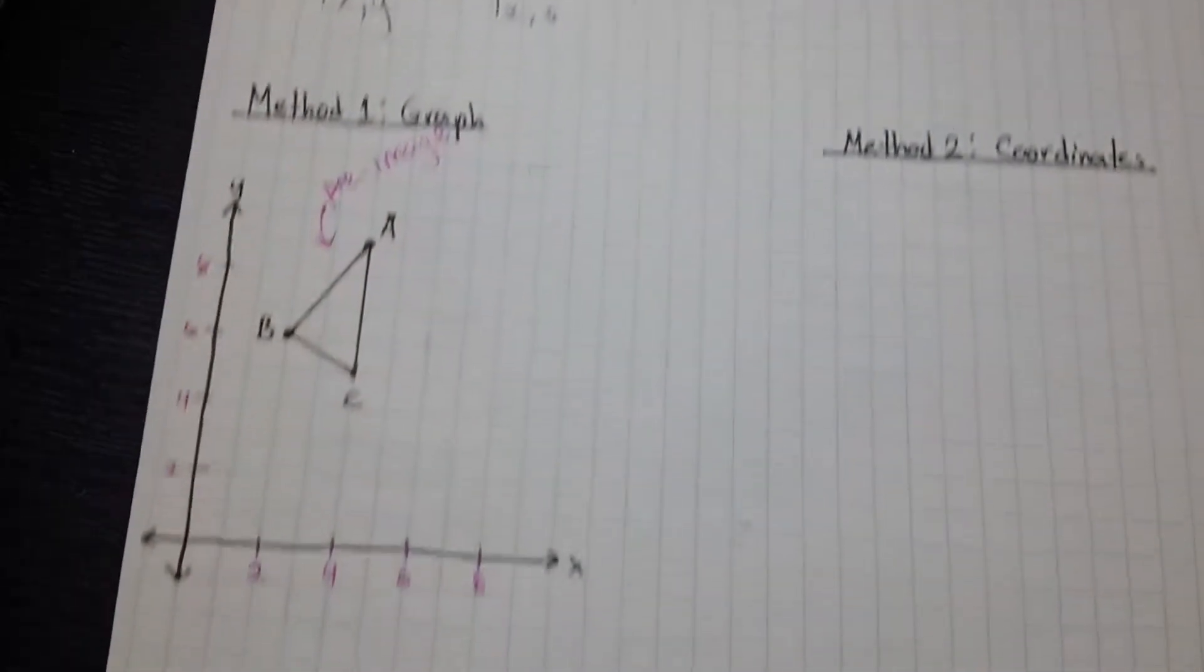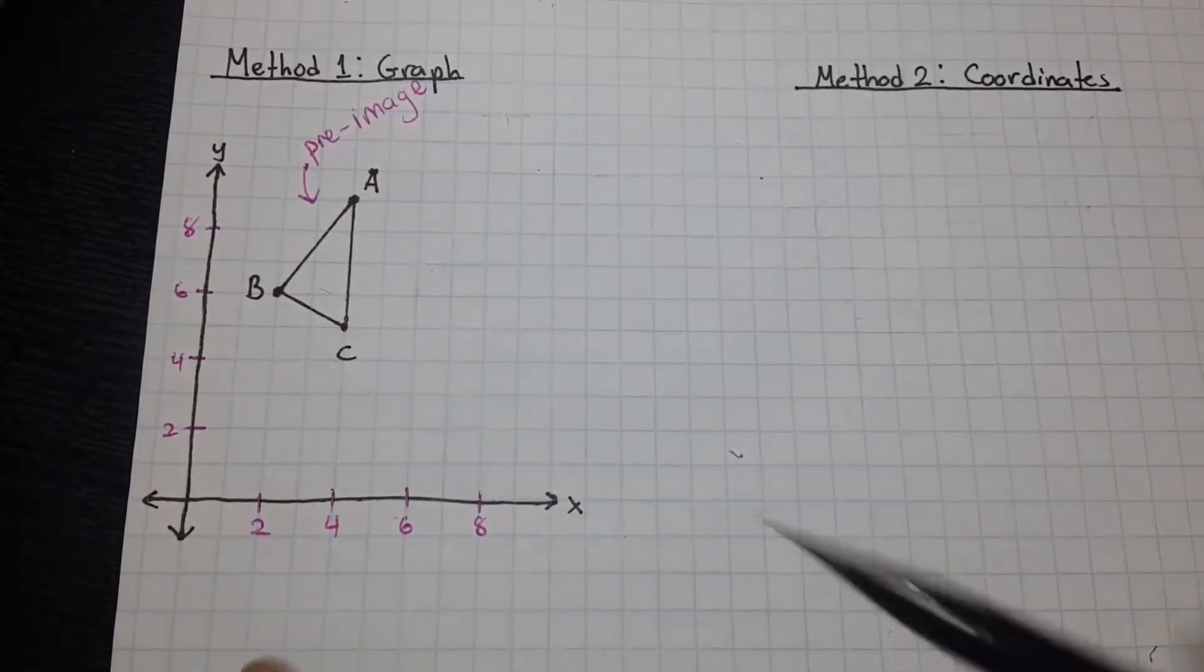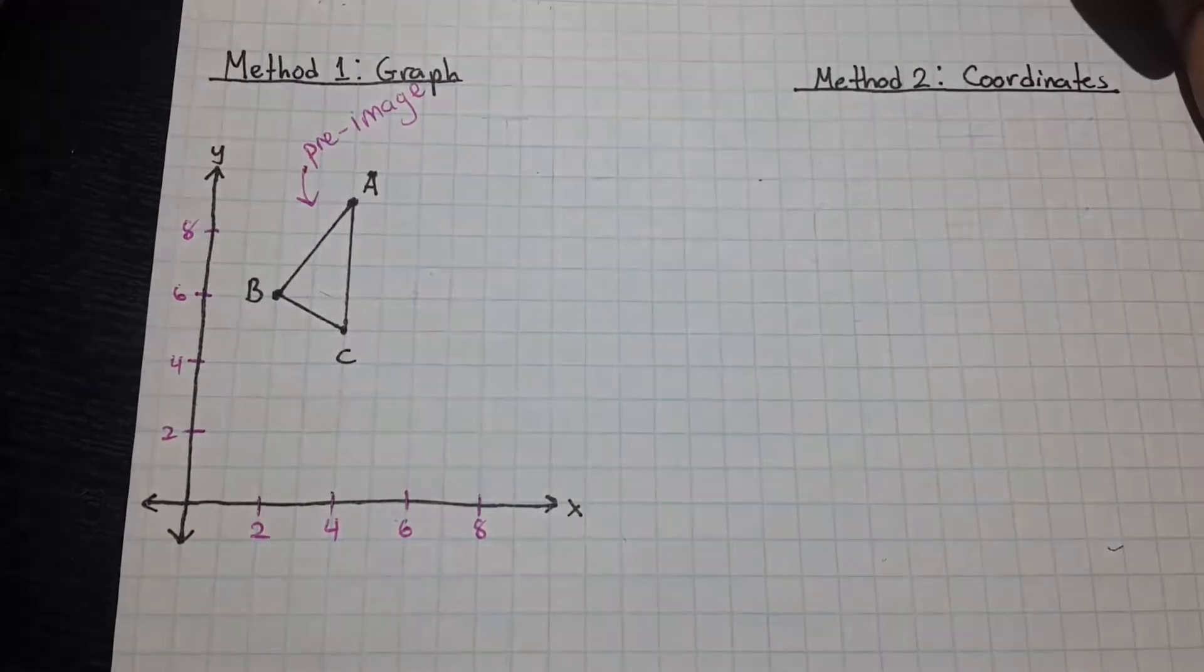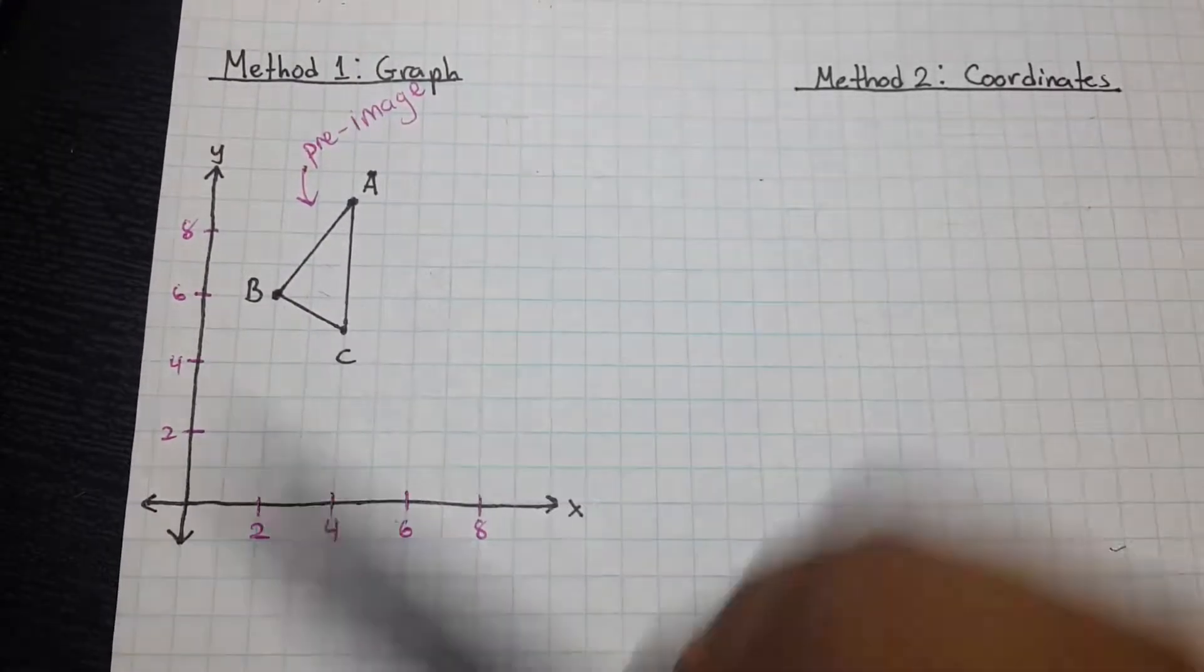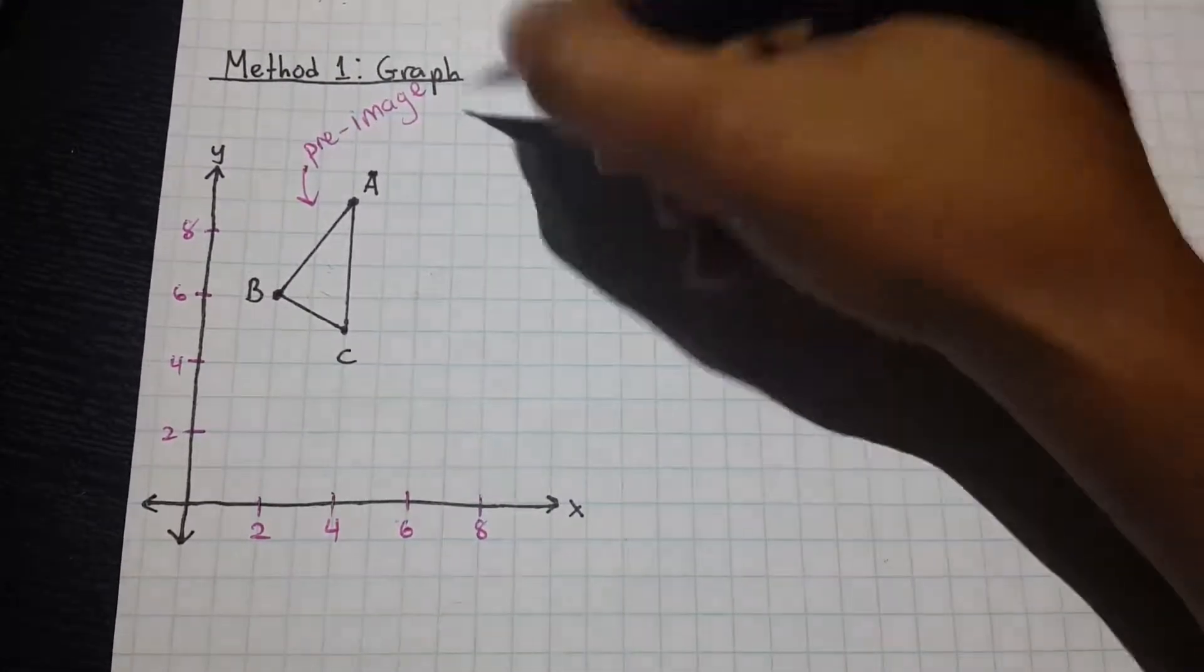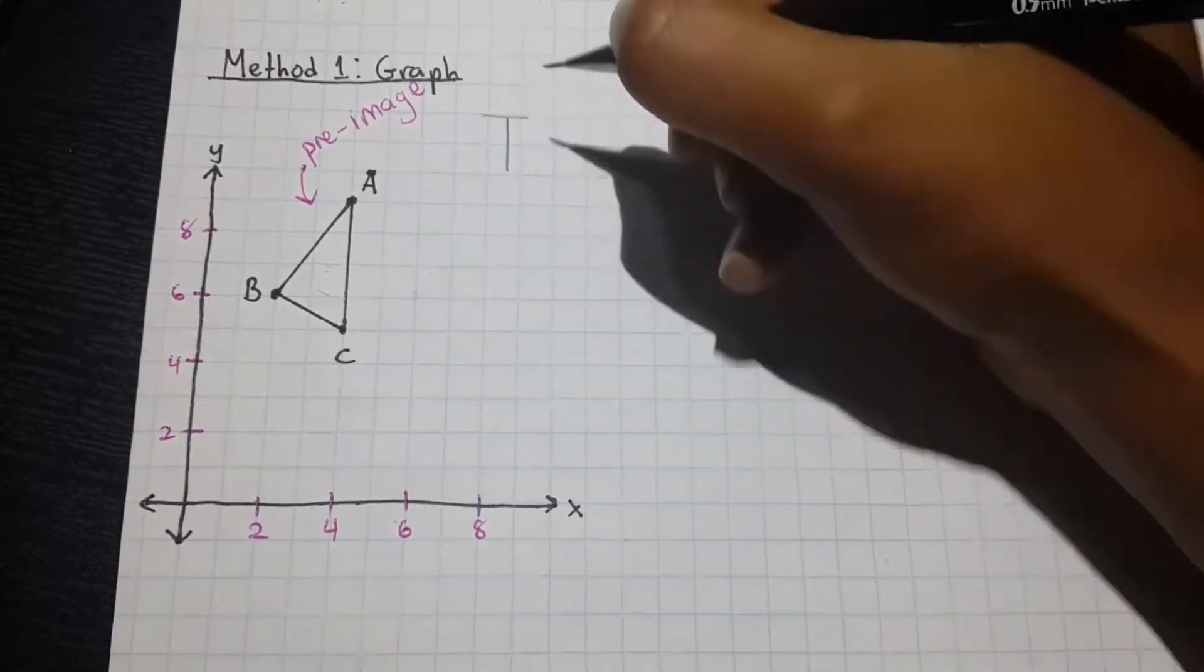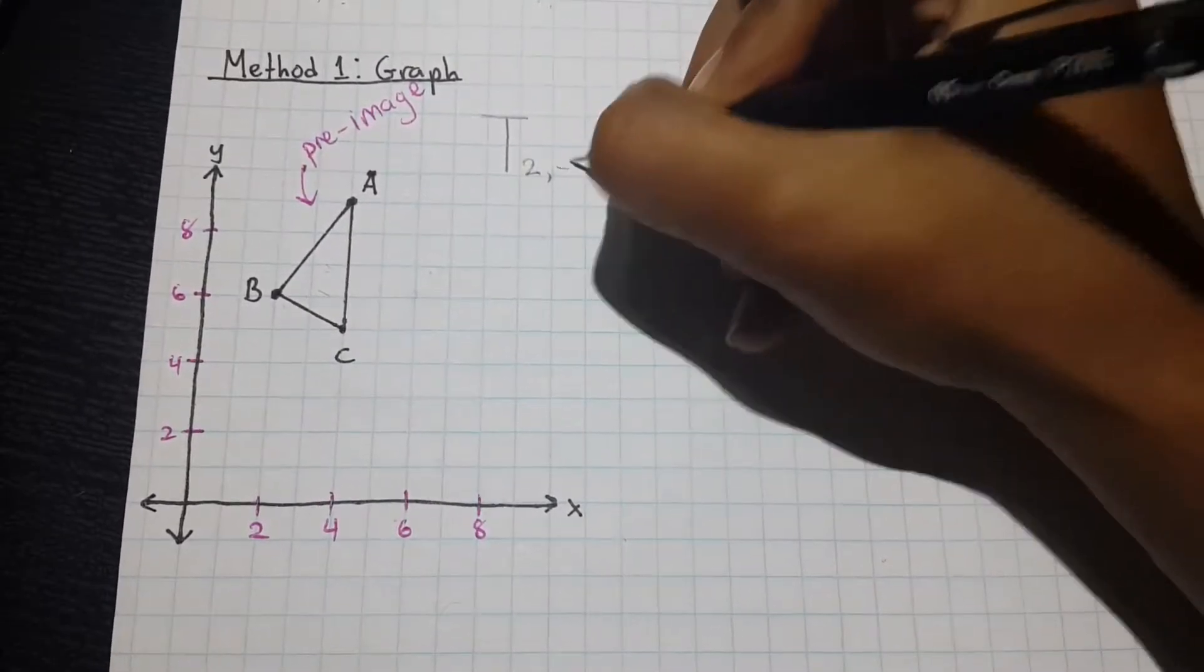So, now let's move on to a more common example that you would see in class. Here we're starting off with our pre-image, triangle ABC. And I want to translate this image two units to the right, but three units down.